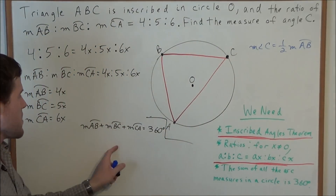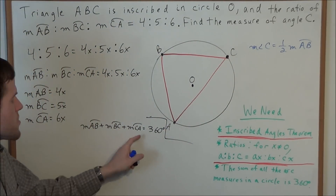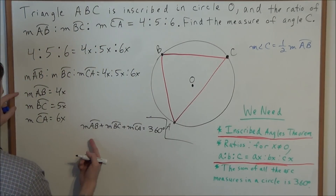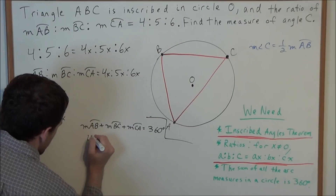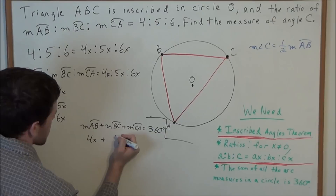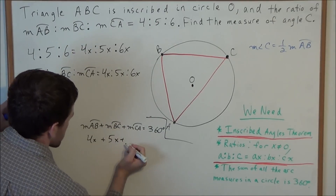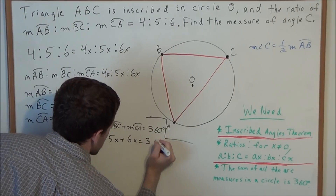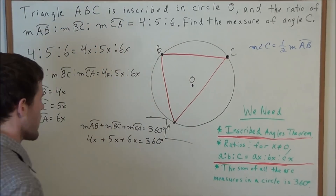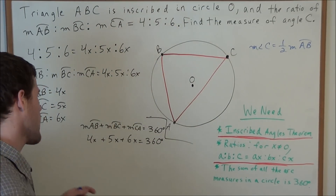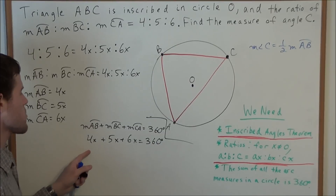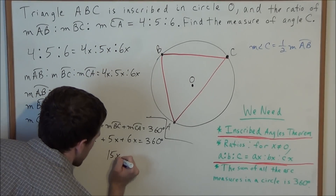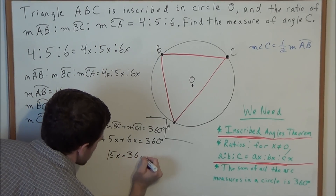We substitute each arc measure: replacing arc AB with 4x, arc BC with 5x, and arc CA with 6x, all equal to 360 degrees. We have three like terms, so we add the coefficients: 4 plus 5 is 9, and 9 plus 6 is 15, giving us 15x equals 360 degrees.